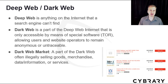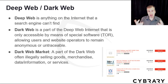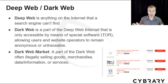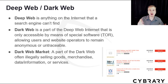A term associated with threats and threat actors is the deep web and dark web. The deep web is anything on the internet that a search engine like Google, Bing, or Yahoo can't find. The dark web is part of the deep web that is only accessible by special software, such as Tor — the Onion Router — allowing users and website operators to remain anonymous or untraceable.